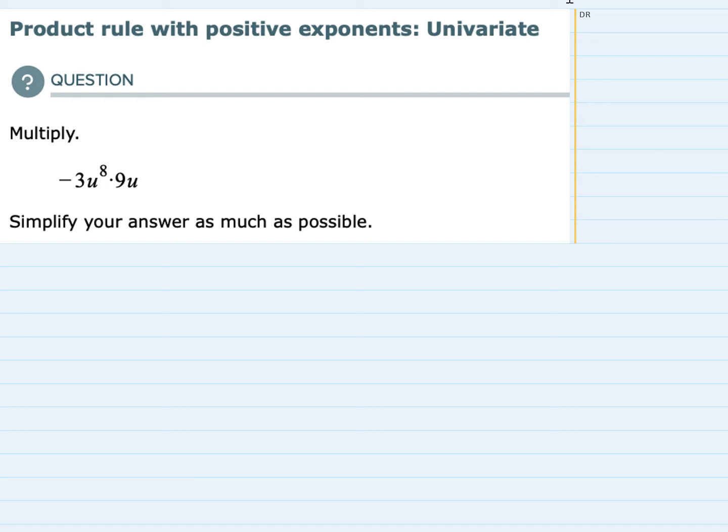So we only have one variable here. We have a u. Actually we have a couple of u's. And we know that we're going to be using the Product Rule. This is multiplication. And we have two parts here for the Product Rule.